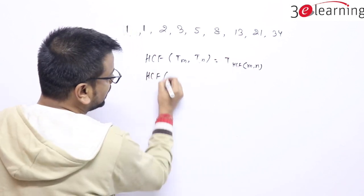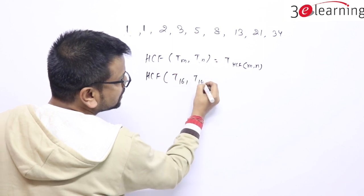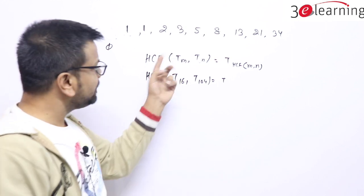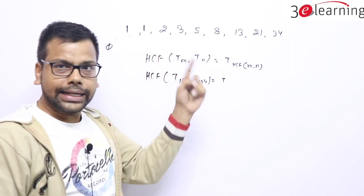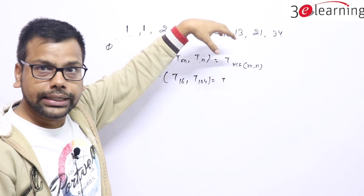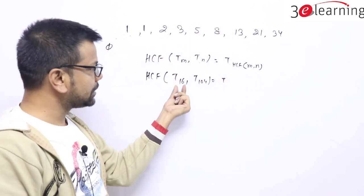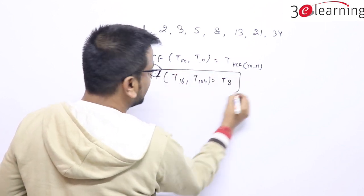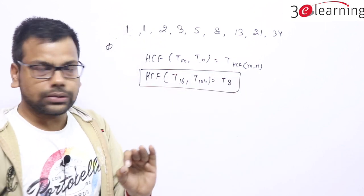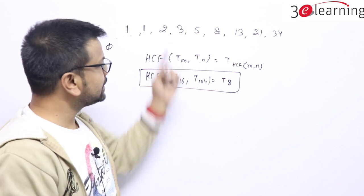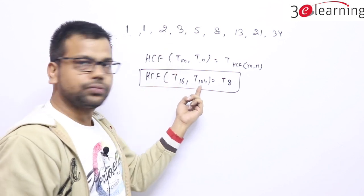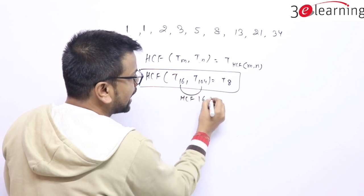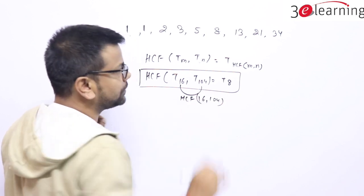If you look at the question, that one is nothing but T16 and T104. That would be a term which is a Fibonacci sequence. For any Fibonacci sequence, two terms' HCF is a term in the Fibonacci sequence, and it shows both HCF. 16 and 104, HCF is 8. It's hardly a 10 second question. HCF of this series T16 and T104 is nothing but T8, because T8 is the HCF of 16 and 104.